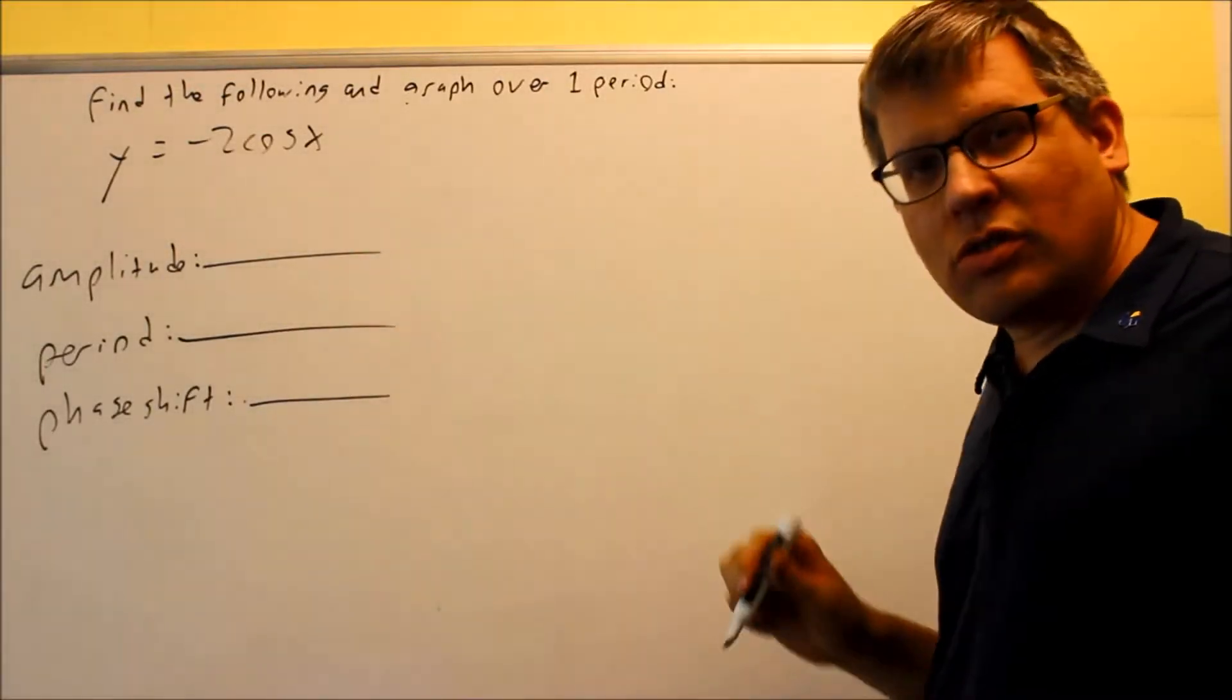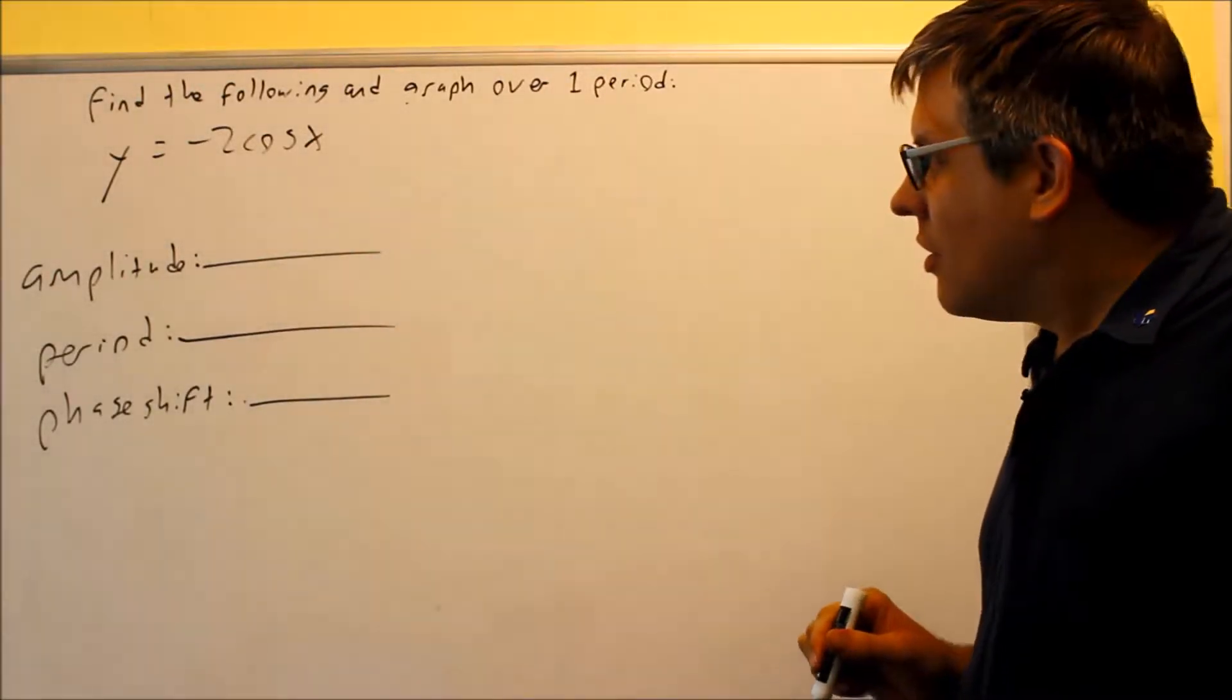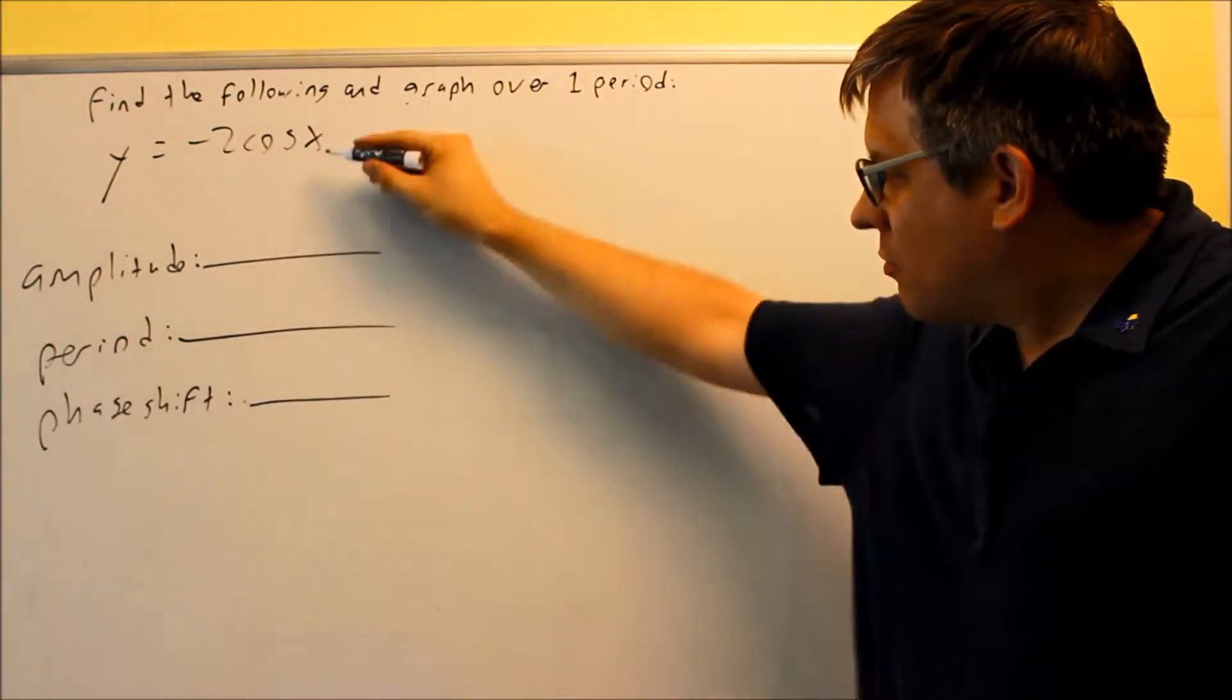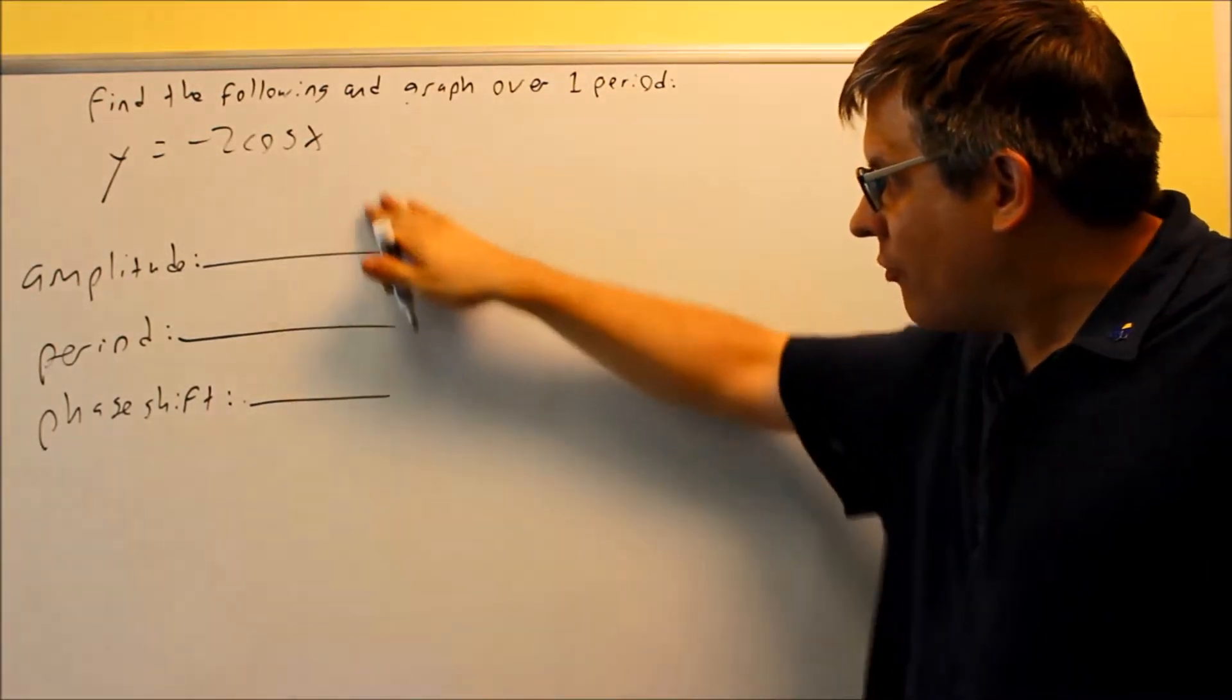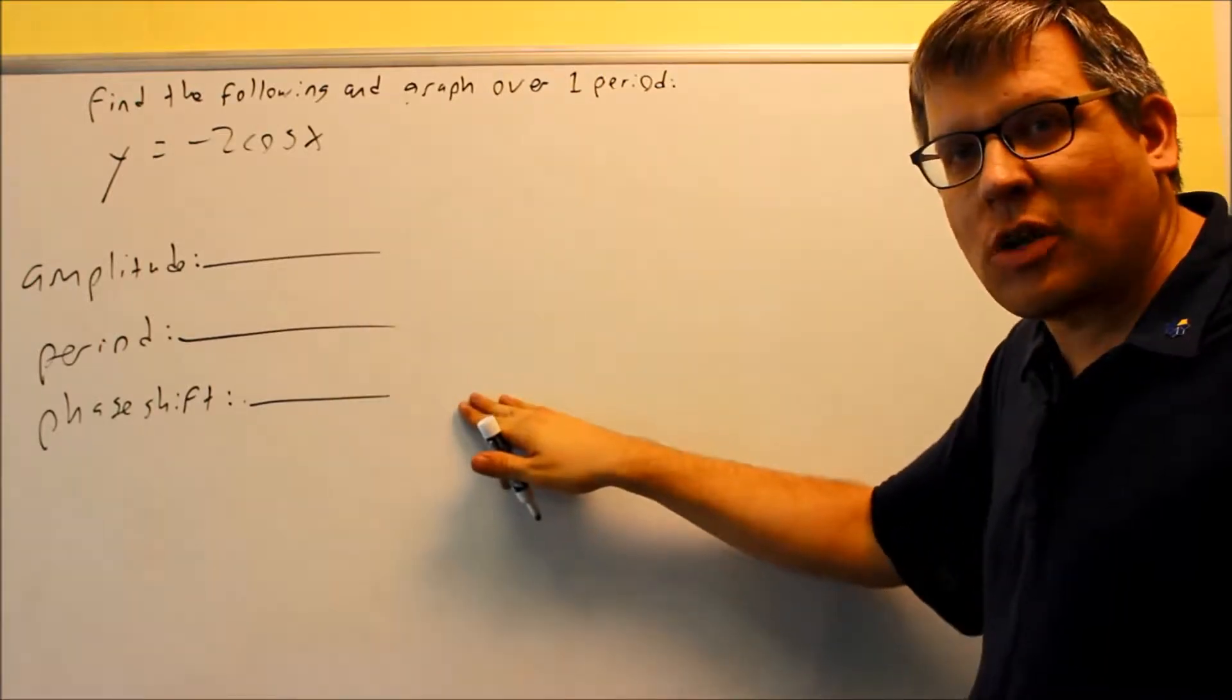Okay, next one we have y equals negative 2 cosine x. Alright, so we're going to do the same procedure that we did for the previous problem when we had the sine graph. So again, I want to first fill out this information by using the formula.